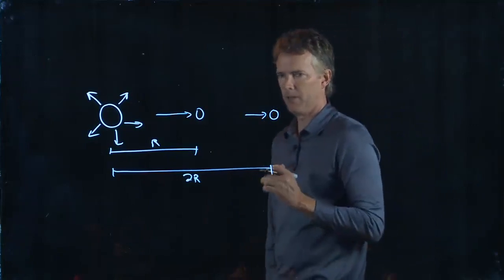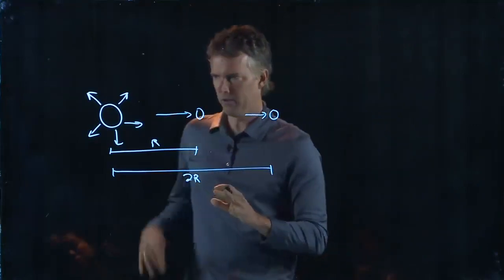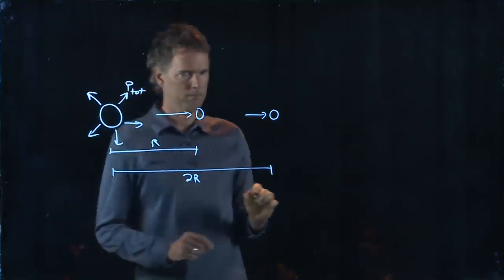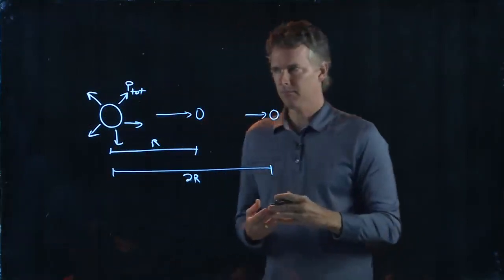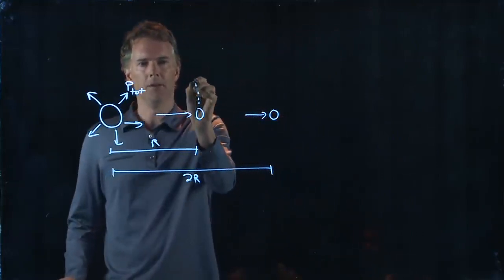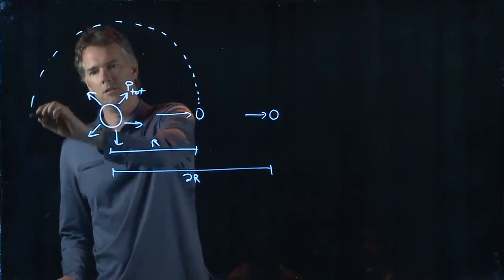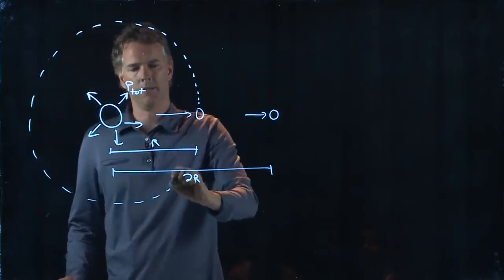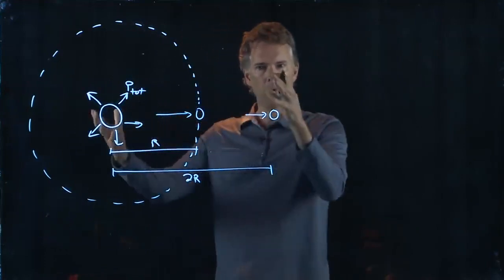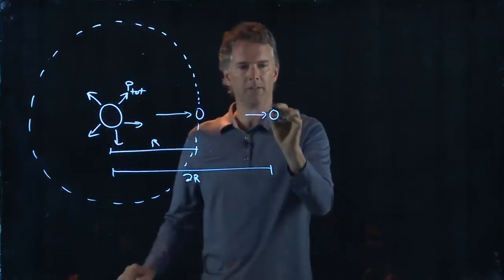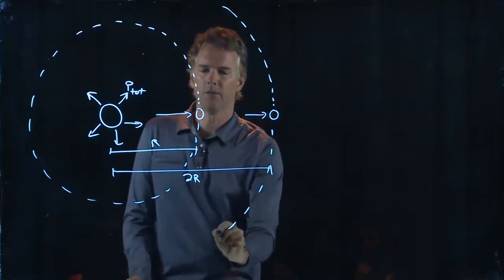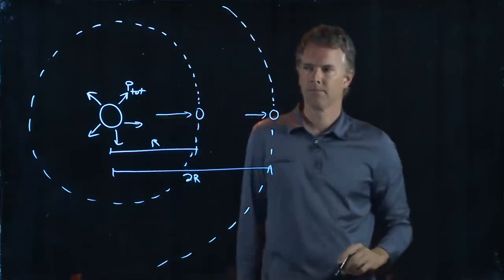So how do we think about this? Well, there is a finite amount of power that's leaving the Sun. All of that power is going to be intercepted by this sphere of radius R. But all of that power is also going to be intercepted by this sphere of radius 2R.